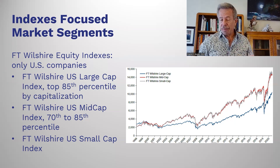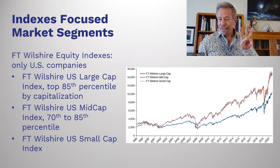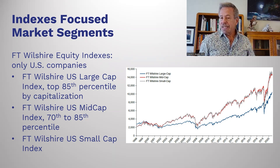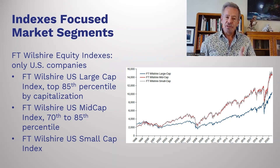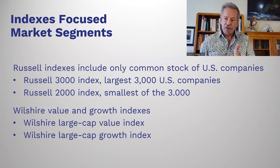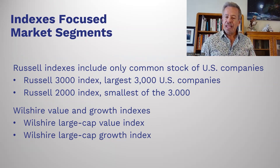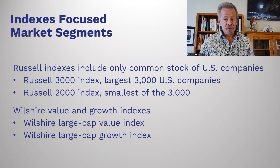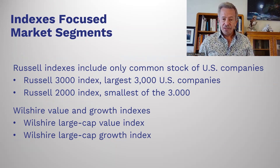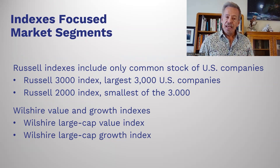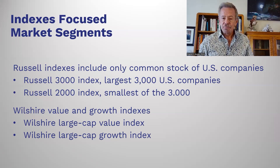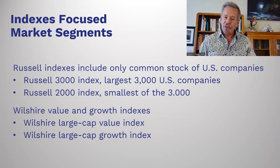Pay attention to different indexes based on what you're shopping for. The big three are the Dow, S&P 500, and NASDAQ. But when you get more involved, start paying attention to the Wilshire Equity Indexes — it'll help you a lot. The Russell Indexes include only common stock, not preferred, and U.S. only. The Russell 3000 covers the largest companies — that's the large-cap index — and the Russell 2000 covers the smallest ones.